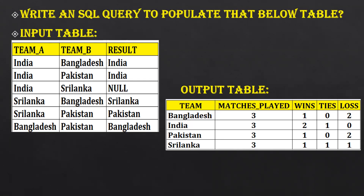Hello guys, welcome to SR Technologies. Today we are going to discuss another SQL problem involving two equations — this is a bit complex compared to a regular one. First, try to understand the input as well as the expected output. The input table is a matches table — a lot of people are watching international cricket matches. You can see team A, team B, and what the result is. In team A you can see India, Bangladesh, Sri Lanka, and Pakistan — overall four teams are playing.